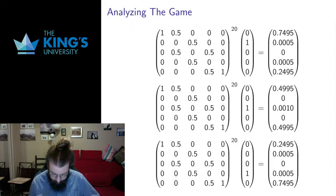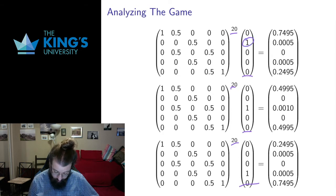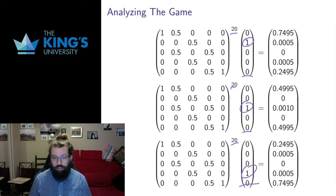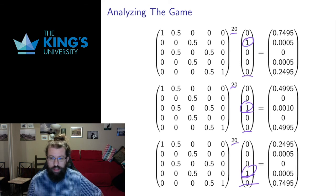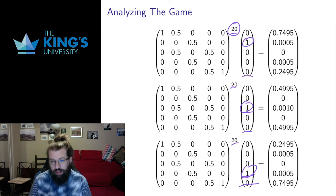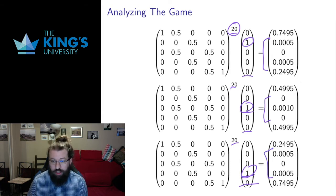Instead of analyzing the eigenvectors, I want to analyze what happens when I take the matrix and play the game some number of times. I'm going to play the game 20 times, taking the matrix action 20 times on starting values with one stake, two stakes, and three stakes. In each of these cases, the middle probabilities are very low — I'm almost certain to be finished the game, with only about a 0.01% chance that I'm still playing.